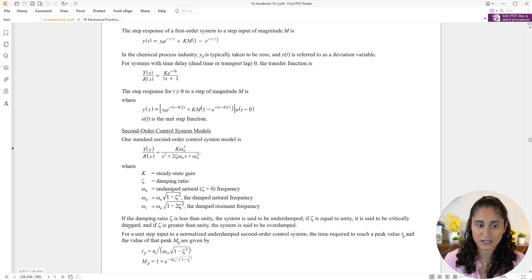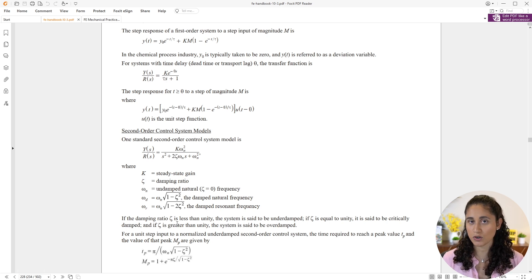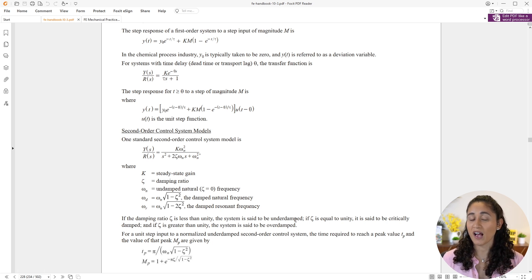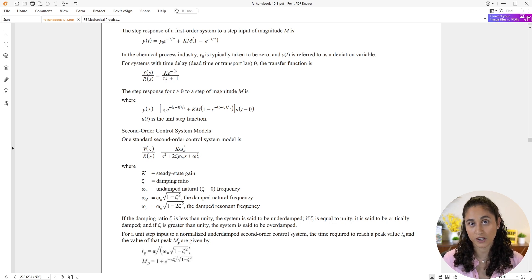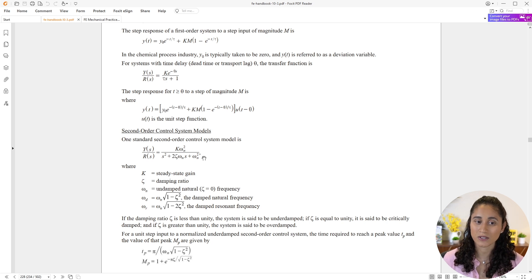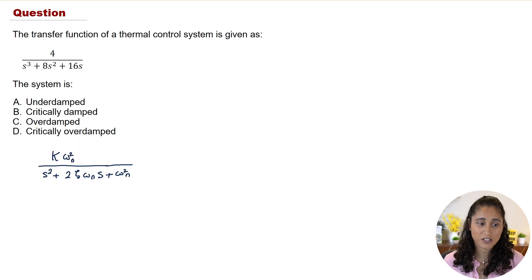If the damping ratio is less than 1, the system is underdamped. If it equals 1, it's critically damped. If it's greater than 1, it's overdamped. Now let's go ahead and write this equation down.